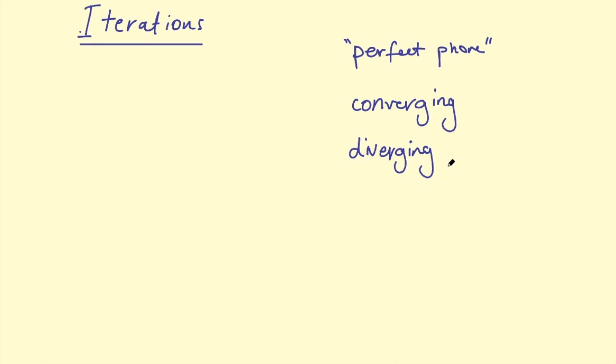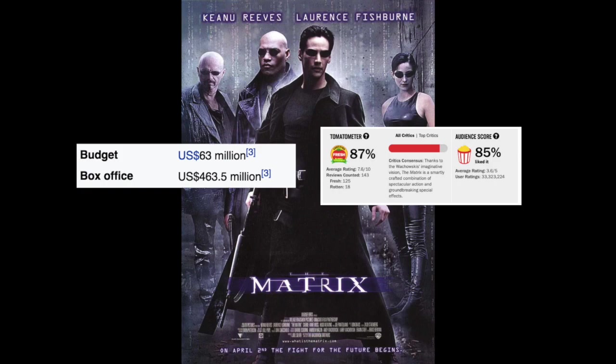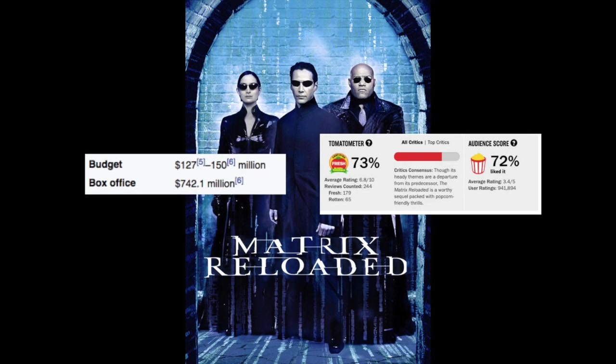If you think of an example like movies. You might watch a movie and it's really good, really successful and makes lots of money. So the producers decide to bring out a sequel. You see the sequel and it's pretty good but not as good as the first one. That might be successful as well.